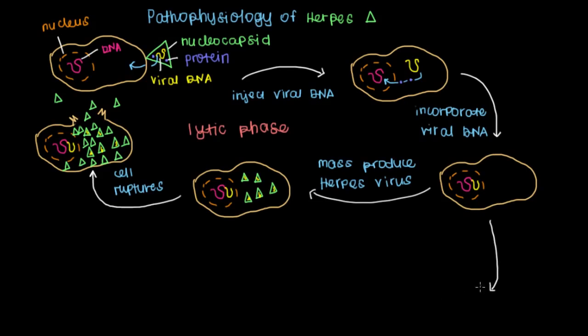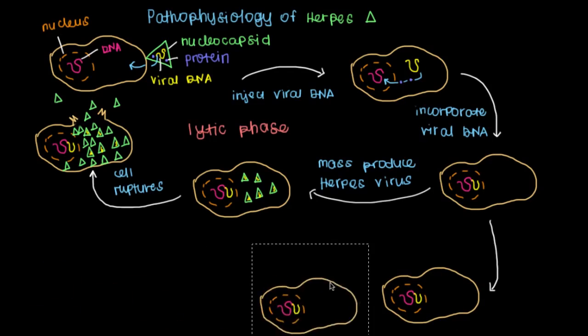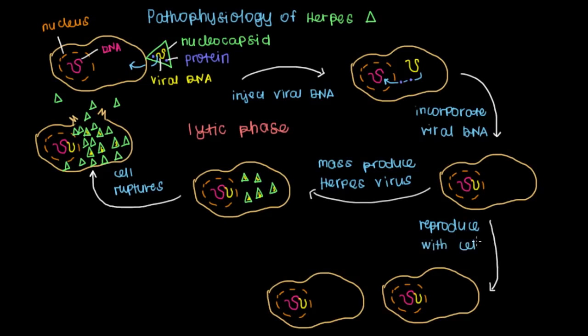Instead of killing the cell, what you'll see happening is that the herpes virus will remain dormant. And so what you'll get are two of these cells. So there's one here and here's another one. The virus just kind of takes a back seat and allows the human cell to grow on its own. And so here the virus will reproduce with the cell.